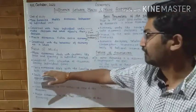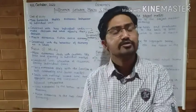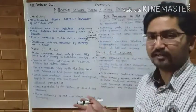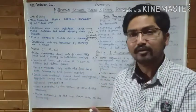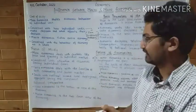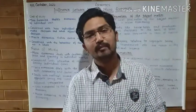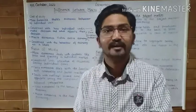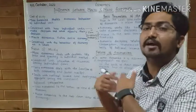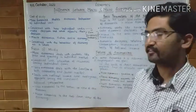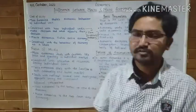Macroeconomics deals with the functions of factor markets as well as commodity markets — both markets are covered by macroeconomics. Macroeconomics discusses larger concepts like national income, total employment, aggregate saving, aggregate investment, and aggregate demand. The word 'aggregate' means total.